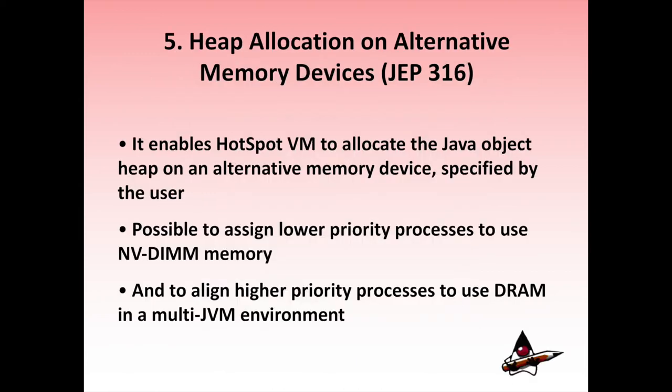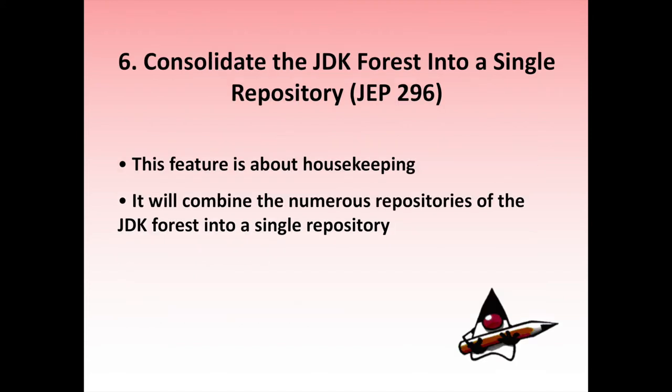Feature 5: Heap Allocation on Alternative Memory Devices, in JEP 316. This is a really cool feature — it enables the HotSpot VM to allocate the Java object heap on an alternative memory device specified by the user. For example, it makes it possible to assign lower-priority processes to use NVM memory, and instead only allocate higher-priority processes to DRAM in a multi-JVM environment.